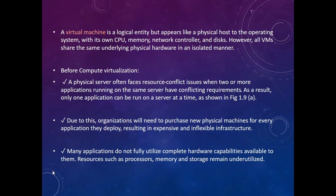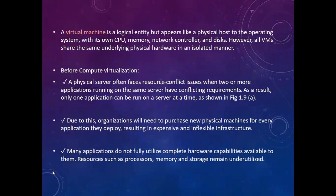A virtual machine is a logical entity but appears like a physical host to the operating system, with its own CPU, memory, network controller, and disks. However, all the VMs share the same underlying physical hardware in an isolated manner. So virtual machine one, VM two, VM three, VM four — so many virtual machines may run on the same system, all using the same underlying CPU, memory, network cards, and disks.